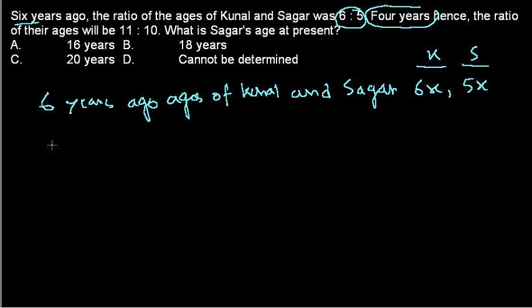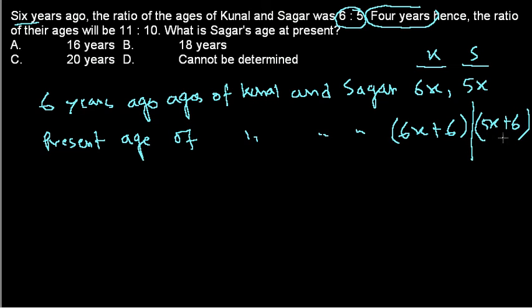So we need to look at the present age of Kunal and Sagar. So present age of Kunal and Sagar: if six years ago Kunal's age is 6X, so after six years what will be his age? It will be 6X plus 6 because he will be six years older. For Sagar it will be 5X plus 6 because Sagar will also be six years older.